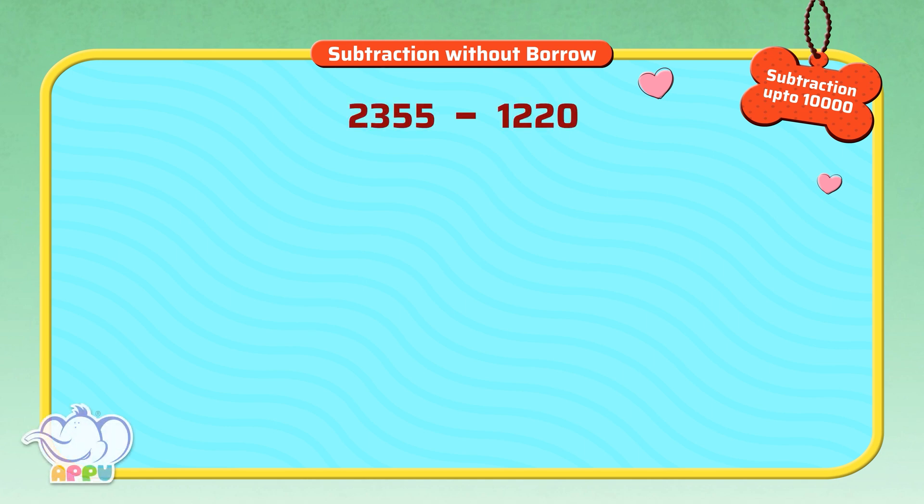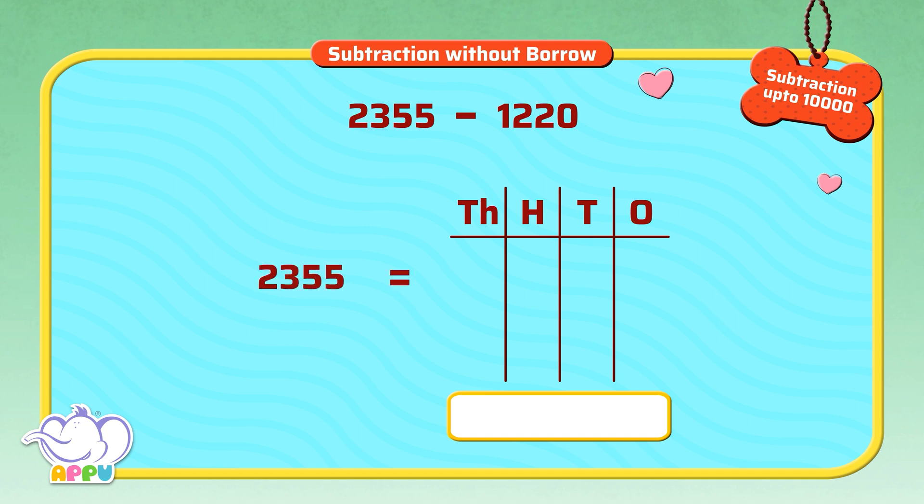Let's see, what is 2,355 minus 1,220? We write 2,355 as thousands, hundreds, tens, and ones. Which is two thousands, three hundreds, five tens, and five ones. And 1,220 as one thousands, two hundreds, two tens, and zero ones.